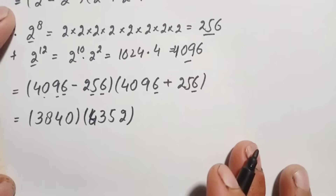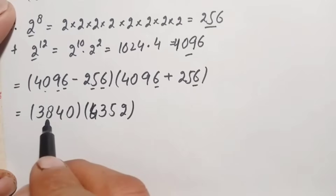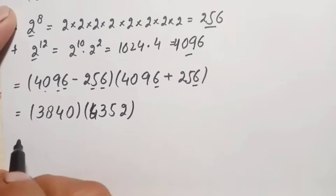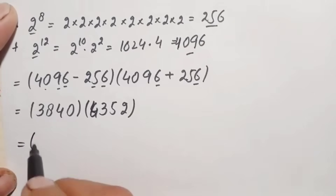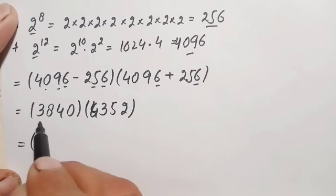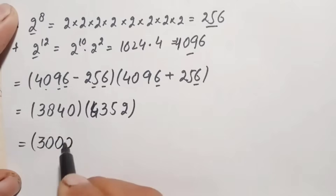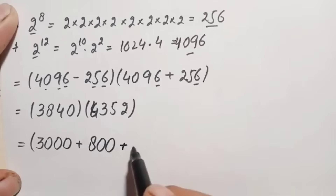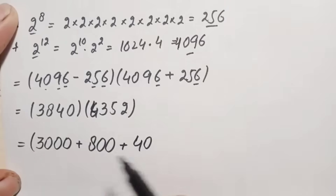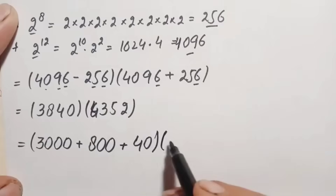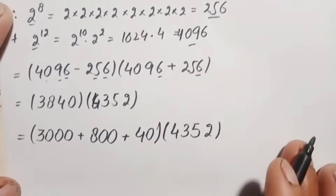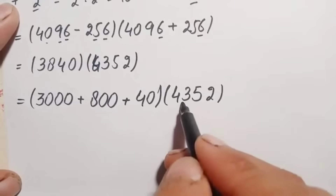To multiply 3840 × 4352 without a calculator, we decompose 3840 by place values of its non-zero digits: 3840 = 3000 + 800 + 40. We then multiply 4352 by each of these separately.